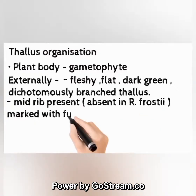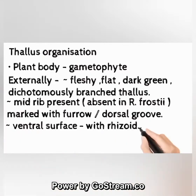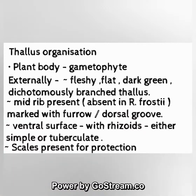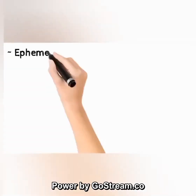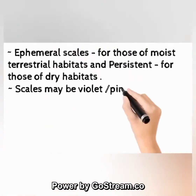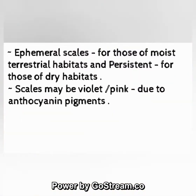Ventral surface has rhizoids — either simple or tuberculate — and scales present for protection. Scales are ephemeral for moist terrestrial habitats and persistent for dry habitats. Scales may be violet or pink due to anthocyanin pigments.